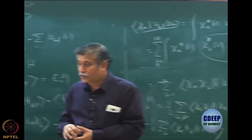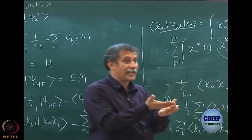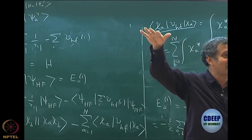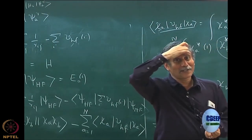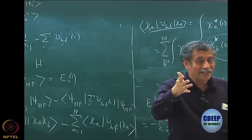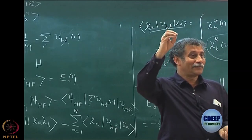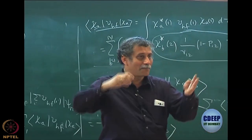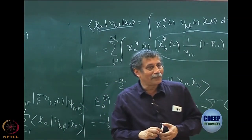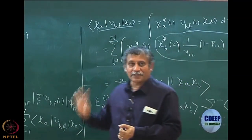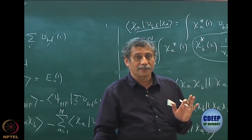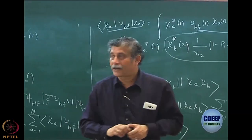It would have been very nice if each determinant — ground, first excited, etc. — were a good approximation to the corresponding state, but unfortunately it does not work out. Only in the linear variation with coefficients C_i do you get an upper bound — that is the Macdonald theorem. For perturbation theory it is dangerous to apply to excited states. All that we are discussing in this course is only ground state perturbation theory.